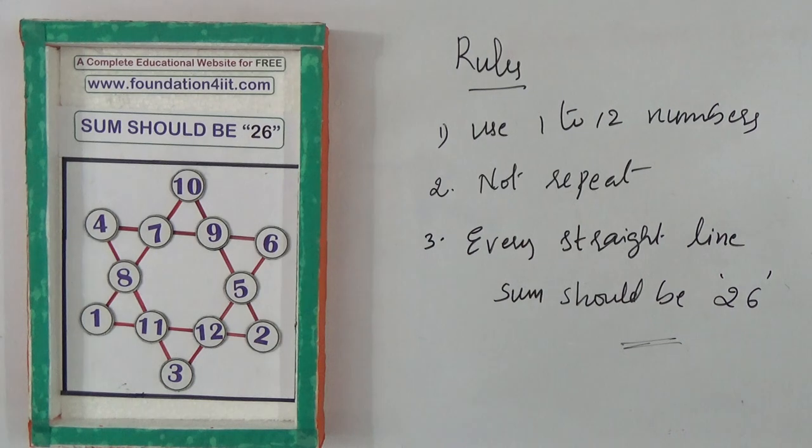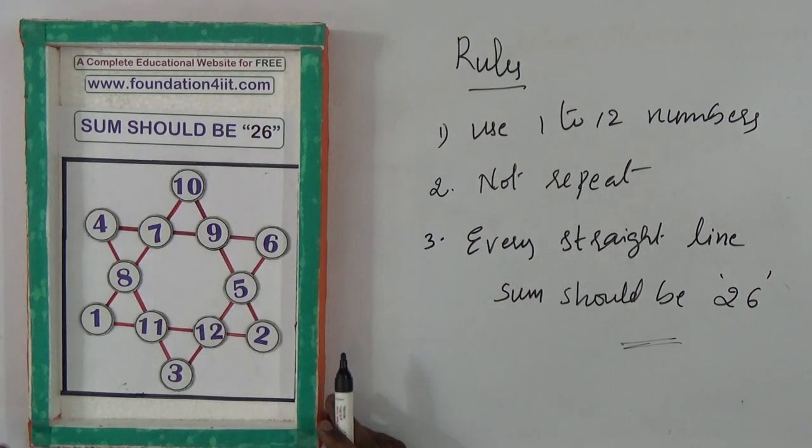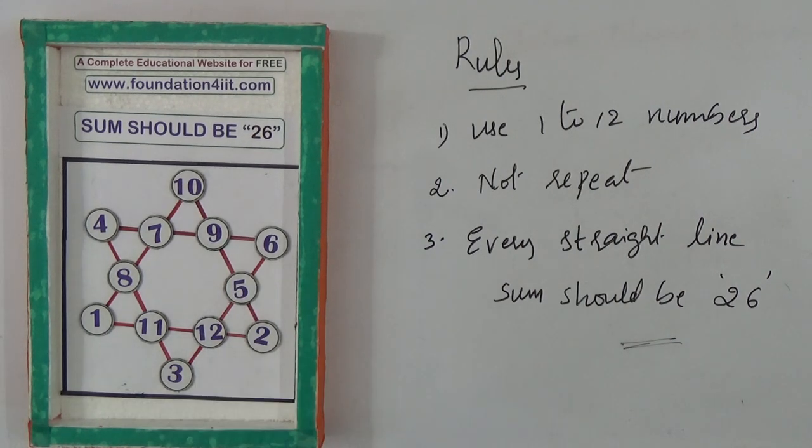If you observe, this straight line sum is 26, this straight line sum is 26 - the total six straight lines, the sum is 26. This is one way we can make the solution. You can try in different ways.